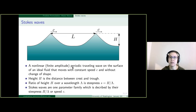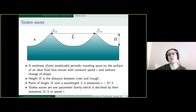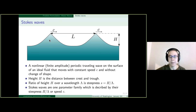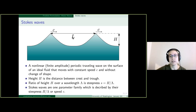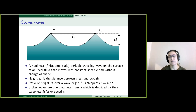Now let me briefly describe what a Stokes wave is. These are nonlinear but finite-amplitude periodic traveling waves on the surface of a fluid. They move without change of shape and with constant speed c. The height h is defined as the distance between trough and crest, and the ratio of height to wavelength lambda is defined as steepness. Stokes waves form a one-parameter family, described by either steepness or speed.